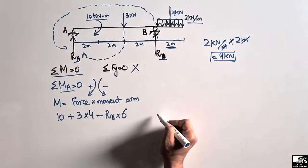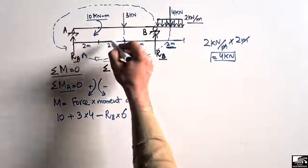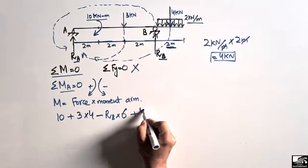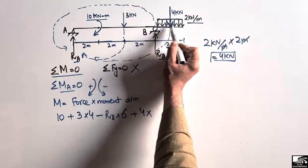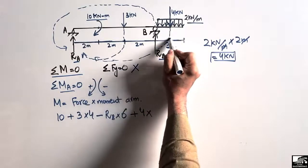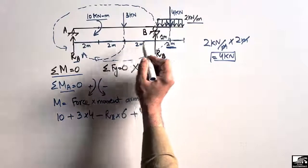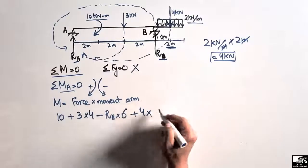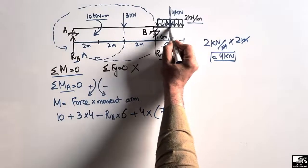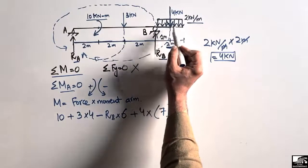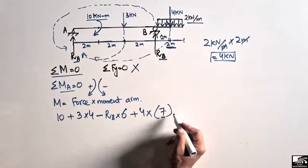This 4 kilonewton equivalent point load creates a clockwise moment about point A, so it is positive. The moment arm is the distance from the midpoint of the UDL to point A. The UDL midpoint is 1 meter from its start, and its start is at 6 meters from A, so the total moment arm is 6 plus 1 equals 7 meters. Therefore the term is +4 × 7.